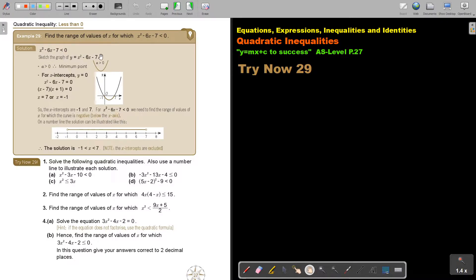We do exactly the same. We're going to sketch the graph. Then if a is bigger than 0, do you see it's positive there? So it's having a minimum point. For the x-intercepts, y is equal to 0. Substitute y and then find my value. x is 7 and x is negative 1.